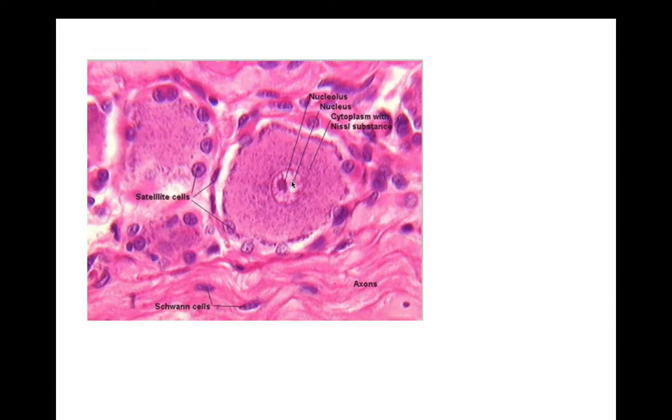Here's another picture pulled from the web, a little bit closer. You can see the satellite cells making a little ring around our neuron. Here is the nucleus and nucleolus of our unipolar neuron. Make sure you know that.